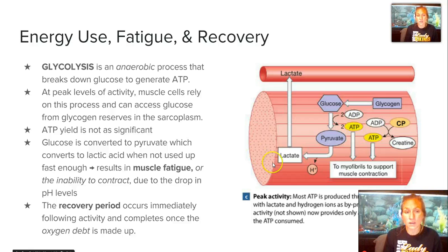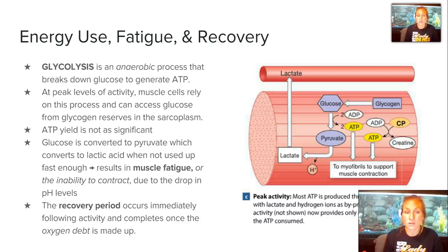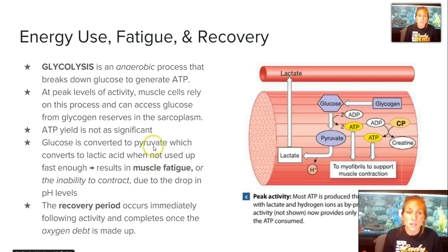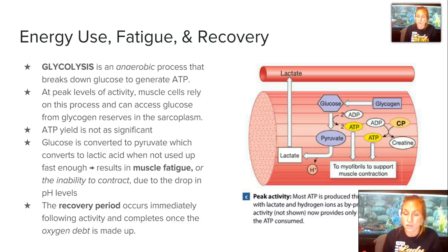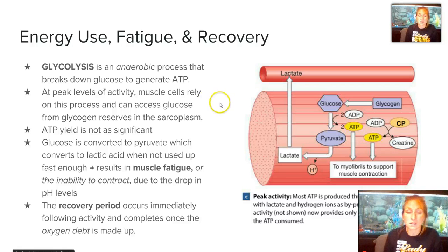When we run out of oxygen, an anaerobic process known as glycolysis — which breaks down glucose to generate ATP — will begin to occur. There isn't as much ATP produced in this scenario, so this only happens at peak levels of activity where muscles rely on this process and access glucose from glycogen reserves in the sarcoplasm. ATP yield is not very significant compared to aerobic metabolism. Glucose is converted to pyruvate, which converts to lactic acid if not used up fast enough — this is where muscle soreness comes from, and it can result in muscle fatigue or the inability to contract due to a drop in pH levels. After activating a muscle, the recovery period immediately begins and is completed once the oxygen debt from that activity is made up.